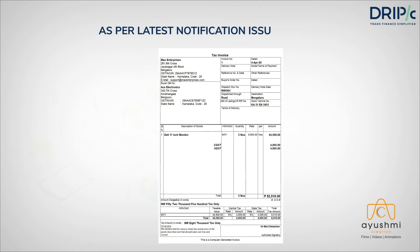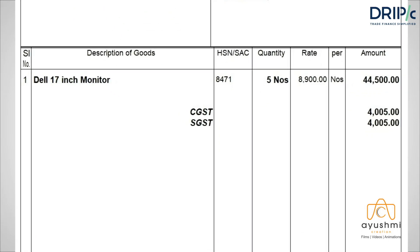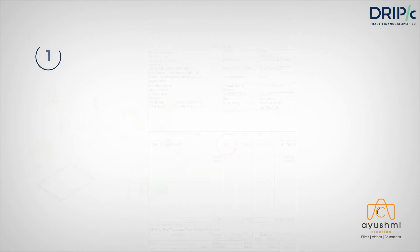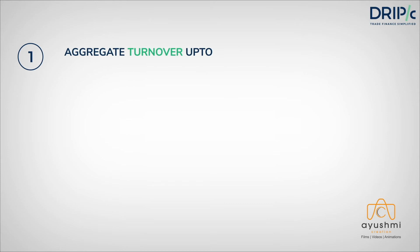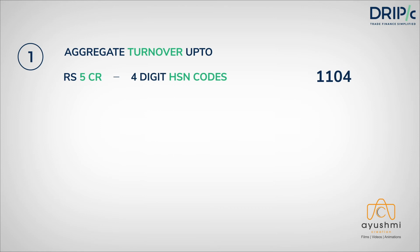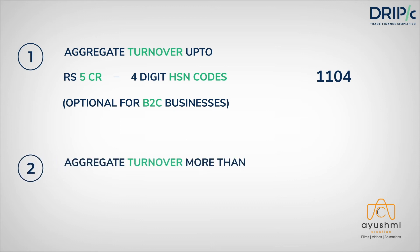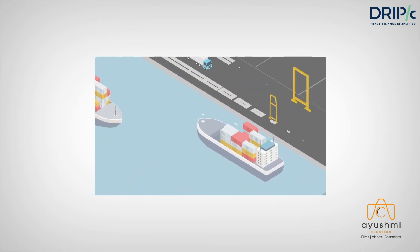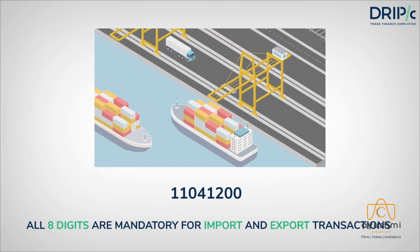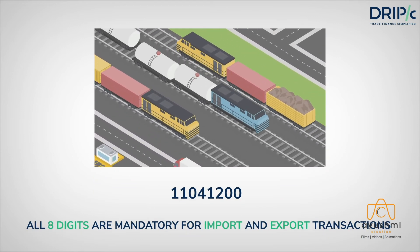As per the latest notification issued by CBIC, businesses have to show specified digits of HSN code upon raising tax invoices for supply of goods, depending upon the range of their turnover. Businesses having aggregate turnover up to Rs 5 crore will have to mention four-digit HSN codes in their GST returns — this is optional for B2C businesses. All businesses having aggregate turnover of more than 5 crore will have to mention six-digit HSN codes for their products. If any imports or exports are governed by foreign trade policies, custom provisions, etc., then businesses compulsorily will have to mention eight-digit HSN code.